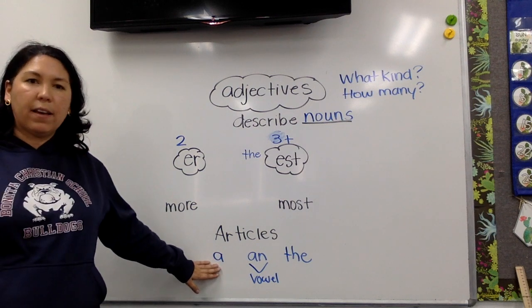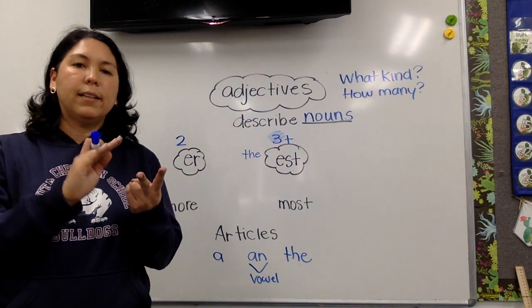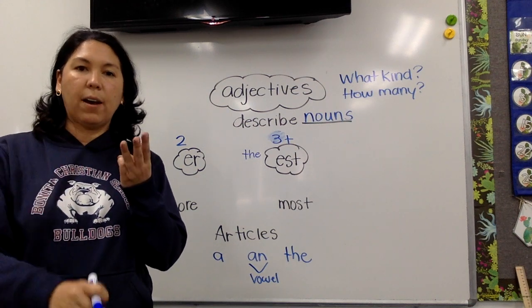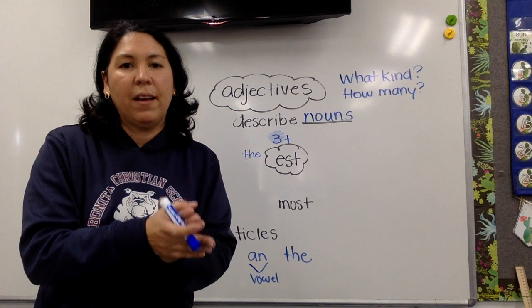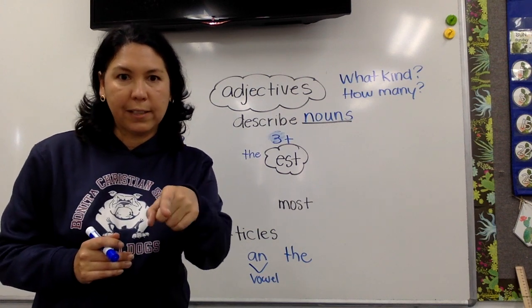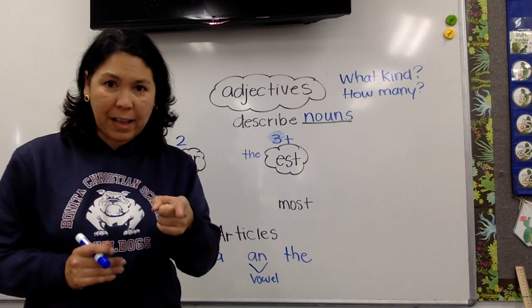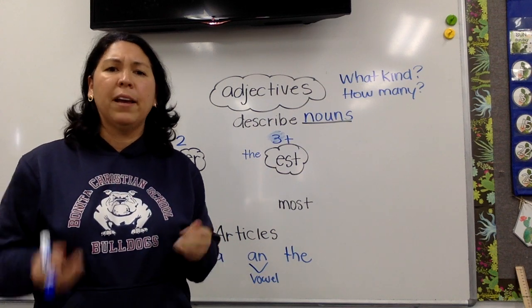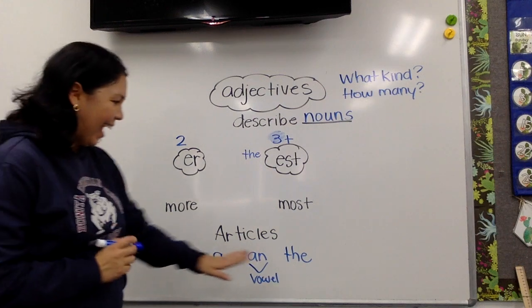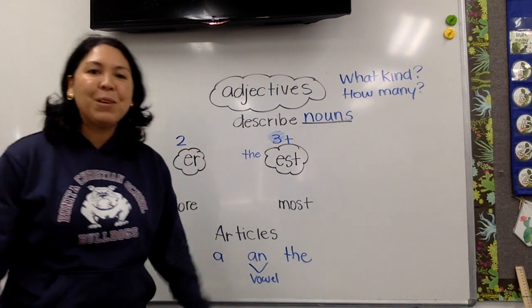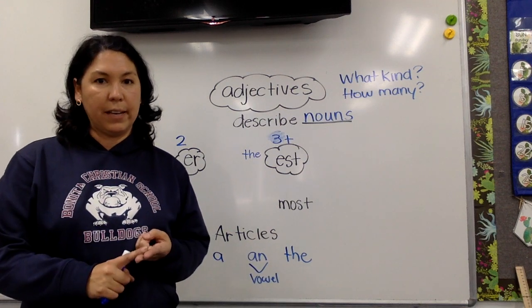'A' can go with any consonant — a peanut, a dancer, a clown, a planet. And 'the' can be used for anything; that's the best one because we don't have to worry if it's a vowel or a consonant. But 'the' is talking about a specific one.